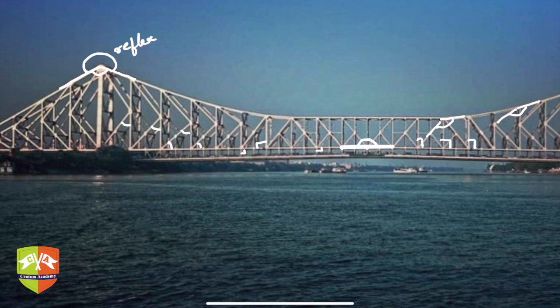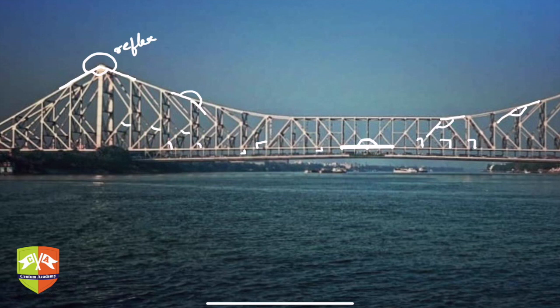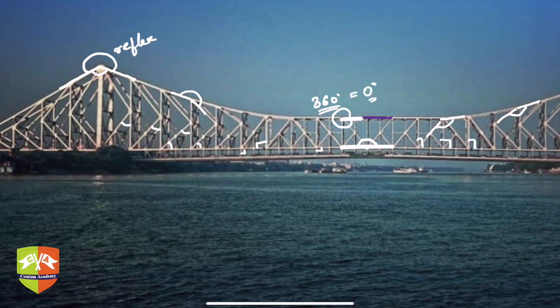Another example of a reflex angle: taking this arm and this arm gives an angle more than 180 degrees but less than 360. For a complete angle, if one link goes from here to here, and the other link starts at the same point and goes to the same end, the angle between them is 360 degrees — a complete angle. So in one bridge, you can see lots of different types of angles.